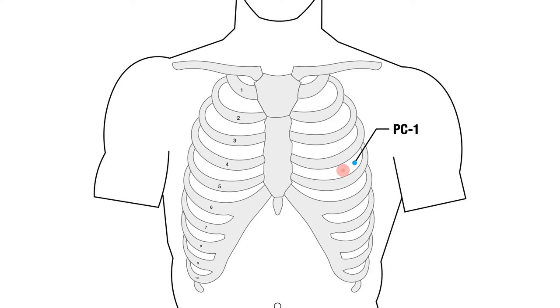So just to review, all our points that are level with the 4th intercostal space. On the midline, we have REN 17, 2 cun lateral to the midline is Kidney 23. Stomach 17 is 4 cun lateral to the midline, or on the nipple. Pericardium 1 is 1 cun lateral to the nipple, or 5 cun lateral to the midline.